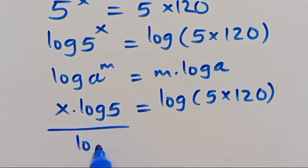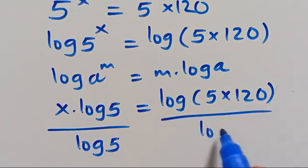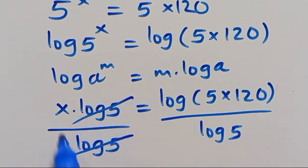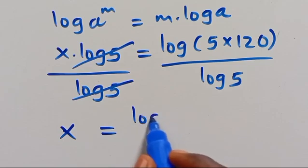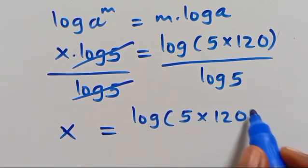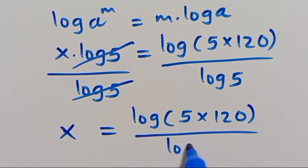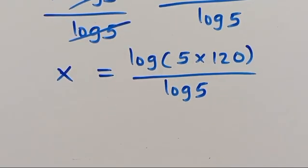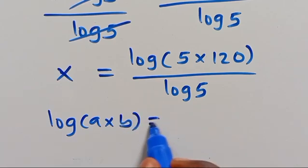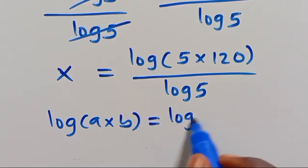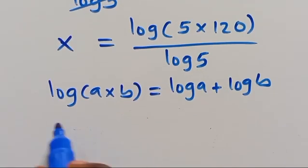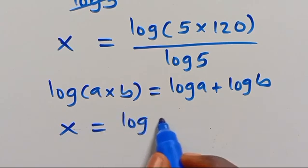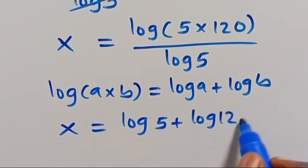Dividing through by log 5, this will cancel out, so we have X equals log of 5 times 120 over log 5. Now we recall that log of a times b in parenthesis equals log a plus log b. From here we have X equals log 5 plus log 120 over log 5.